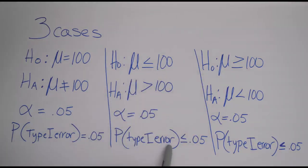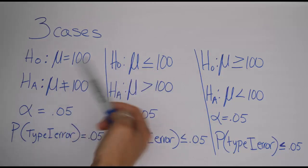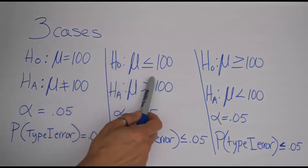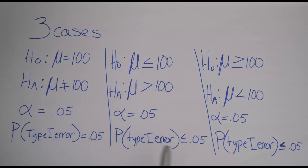So remember, a type 1 error assumes that the null is true and you've rejected it. That's what it means to have a type 1 error, that the null hypothesis was true, you came along, you tested that hypothesis, you rejected it in error, and that was a mistake.